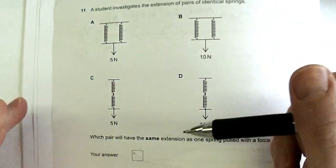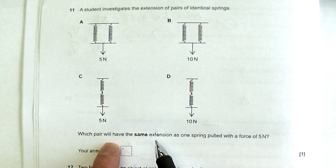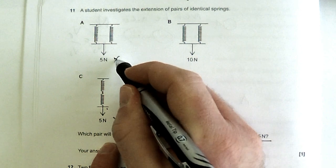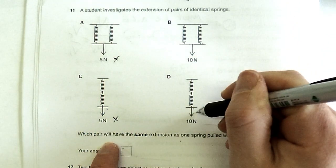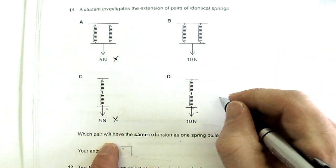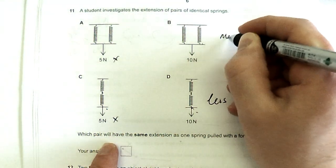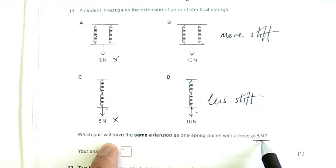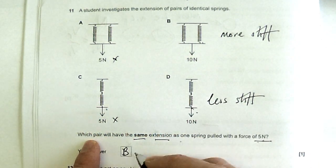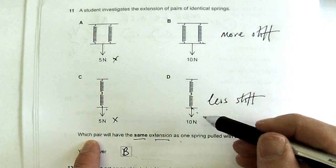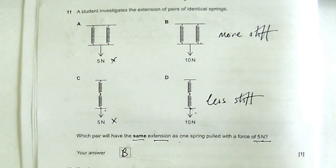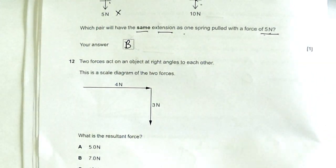A student investigates the extension of pairs of identical springs. Which pair will have the same extension as one spring with a force of five Newtons? It's not going to be these two. That's clearly going to have more extension. That's going to have less extension. So in this case, we're just deciding between these two. This is a set of parallel springs, and this is a set of series springs. This is going to be less stiff. It's actually going to be half as stiff, and this is going to be more stiff. So the point we're trying to think of is we've got five Newtons pulling on it, and we want the same extension as one spring with five Newtons. So it's going to be B, because this will extend more than one spring. This will extend four times more than one spring with five Newtons, whereas this will extend the same as one spring with five Newtons. Tricky one that one, but I'm sure you can get that. Hooke's Law is quite a simple one, really, to get your head around.